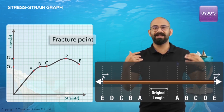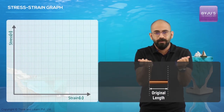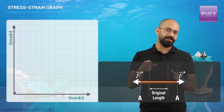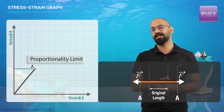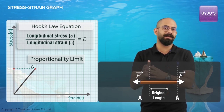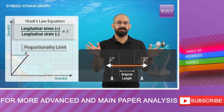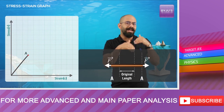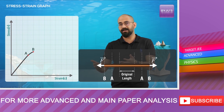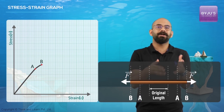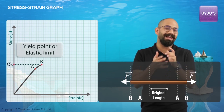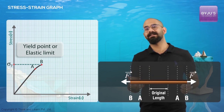Let me explain the graph again a little more slowly. Till it reaches point A — the proportionality limit — Hooke's law is still valid: stress divided by strain is always a constant, and the slope is equal to Young's modulus. From A to B, stress by strain is no longer the same constant, so it is not directly proportional.